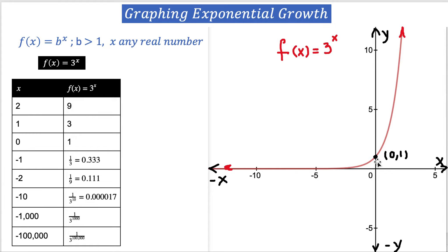Regardless of whether the base is 2, 3, 4, or 5, the basic exponential function is going to have the intercept at the point (0, 1). Now if we take x = -1 and plug in 3^(-1), we can rewrite it as 1/3, which is 0.33. So the output is still a positive number, even though x is negative.